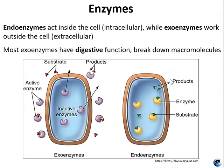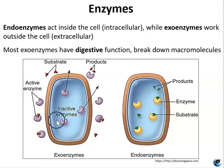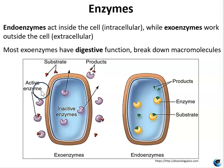Endoenzymes act inside the cell — for example, building proteins from amino acids. Those are endoenzymes and those are anabolic reactions. Exoenzymes, on the other hand, are enzymes working outside of the cell. They break down larger molecules so they're small enough for the cell to bring them in. Exoenzymes are associated with catabolic reactions — essentially the cell is eating what's outside of it using enzymes that break it down.